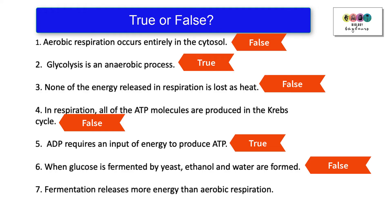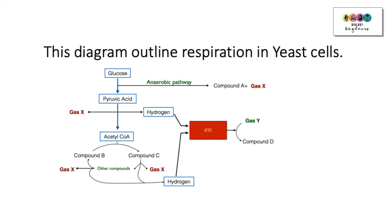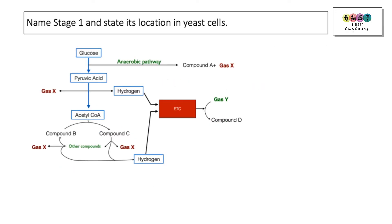This diagram outlines respiration in yeast cells. The first part of the question asks you where does stage one take place. Where does glycolysis take place? It takes place in the cytosol, the liquid part of the cytoplasm.